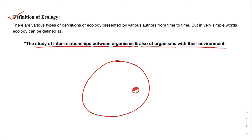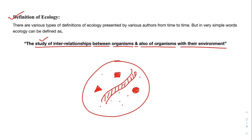So we have organisms here along with abiotic components like soil and a water body. The definition refers to the interrelationships between these organisms — the relationship between one organism and another — as well as the relationship of any organism with its abiotic surroundings.